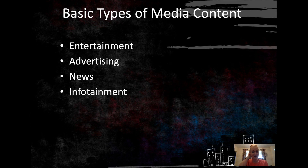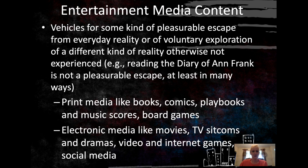First of all, we have to go through the basic types of media content. They are these four areas: entertainment, advertising, news, and infotainment. We're going to present these, define them, and give you a few examples. In the news area, we're going to go through some different models and also newsworthiness. But first, let's talk about entertainment media content.